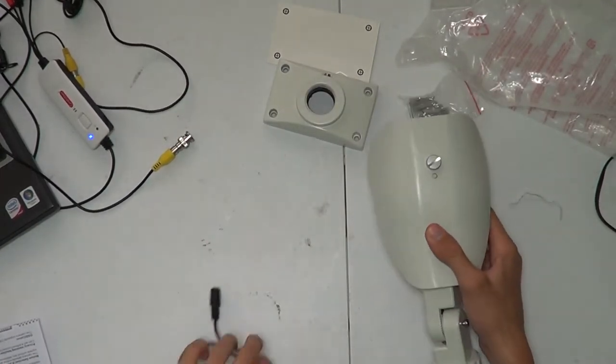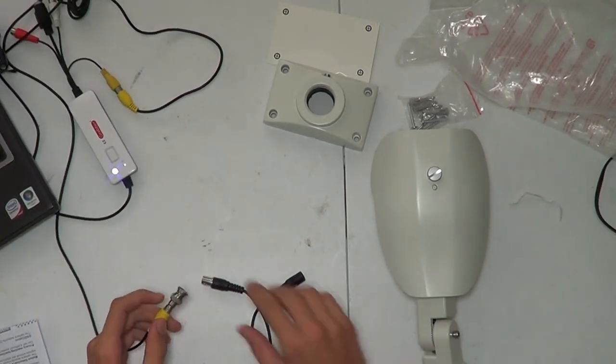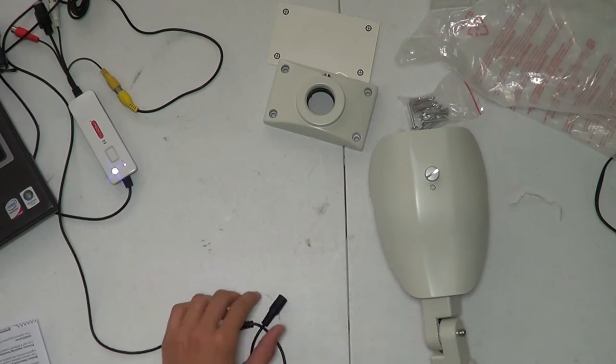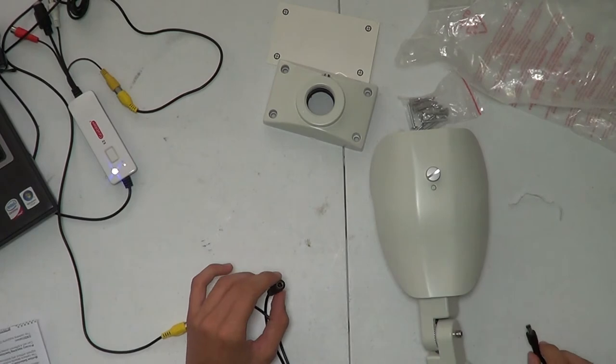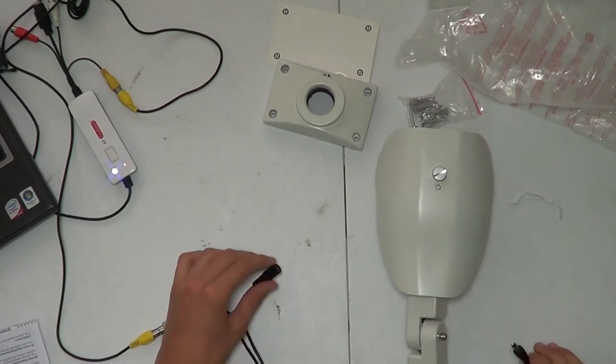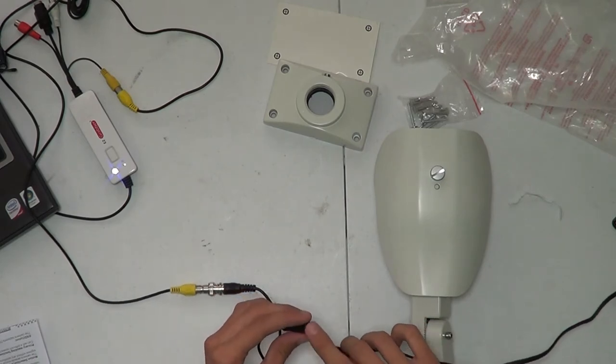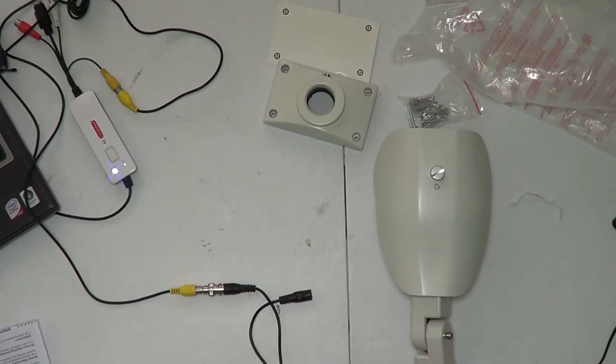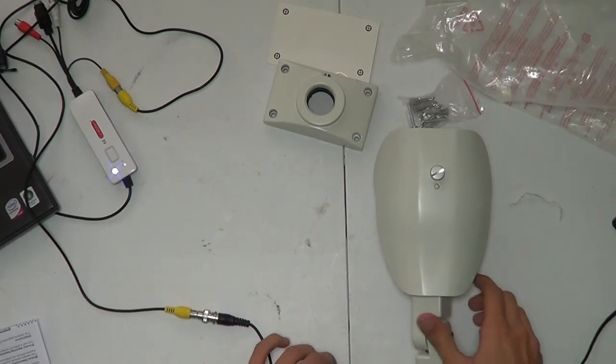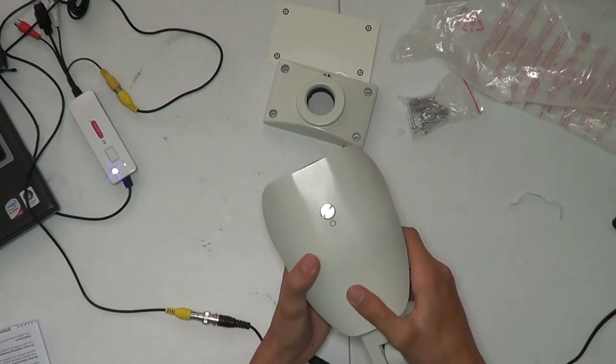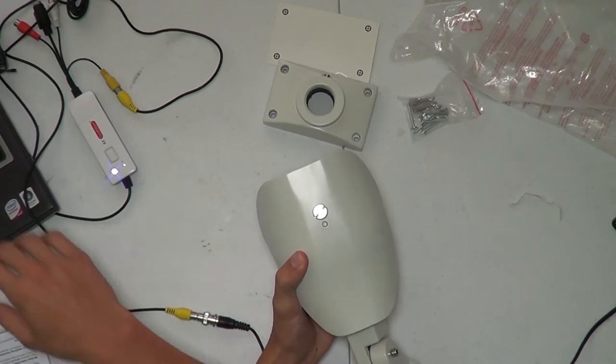We're going to go ahead and hook up the camera to a laptop over here using a USB video capture card. Something to note about this camera is that the power supply is not included, so you'll need to supply your own 12-volt DC power. It is center pin positive. I have a simple power supply here. I'm going to hook it up and give it power. Let's move over to the camera's view.